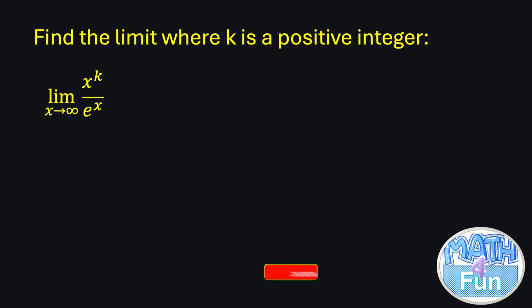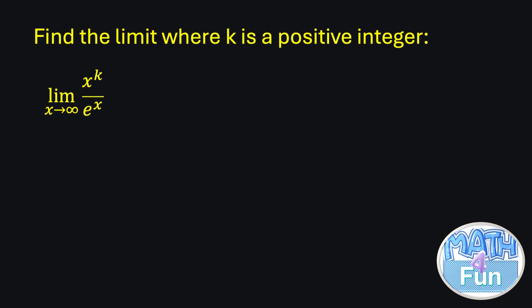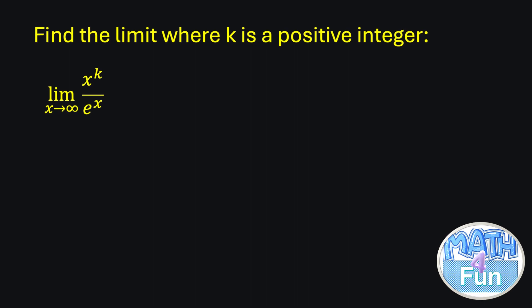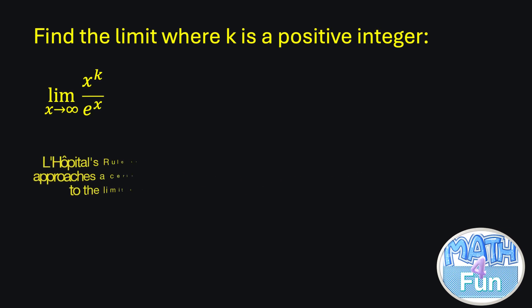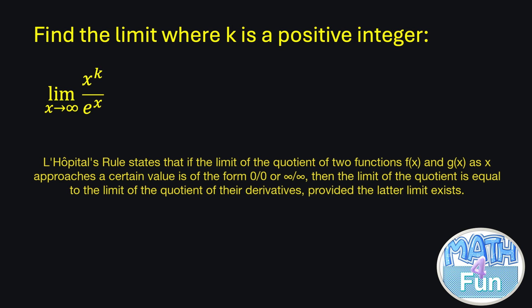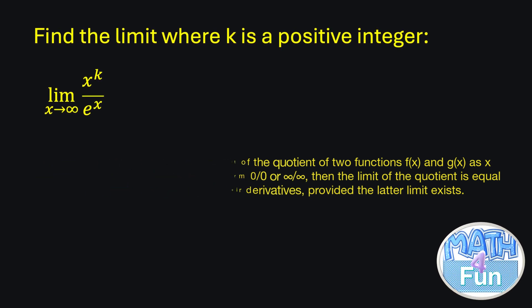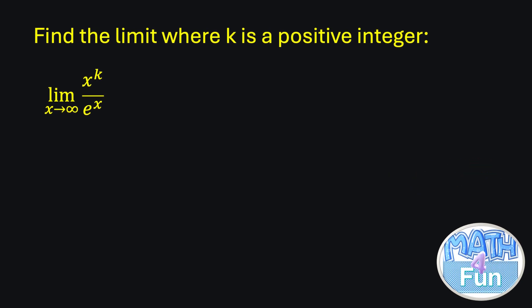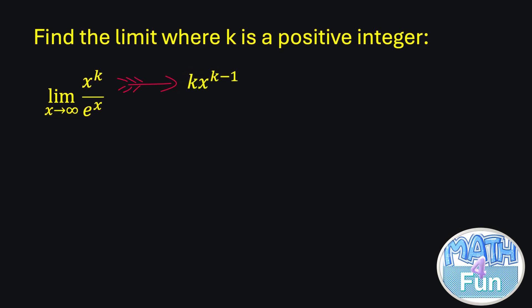Another example: find the limit where k is a positive integer — the limit as x approaches infinity of x^k over e^x. To find this limit, we use L'Hôpital's rule, which states that if the limit of a quotient is of indeterminate form (∞/∞ or 0/0), then the limit of their derivatives will be the same, provided the limit of the derivatives exists. Differentiating the numerator x^k gives k·x^(k−1), and differentiating the denominator e^x gives e^x.